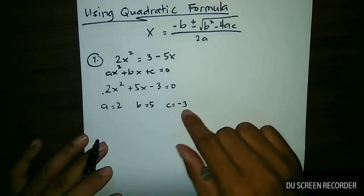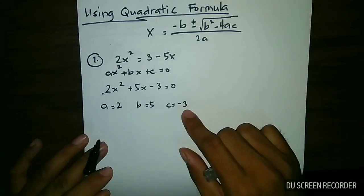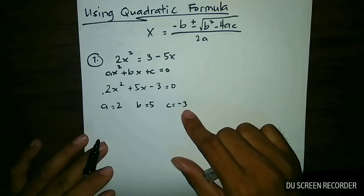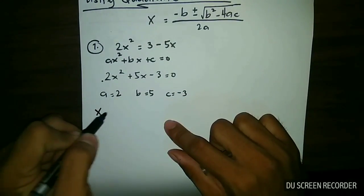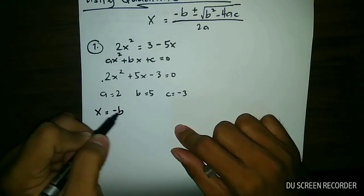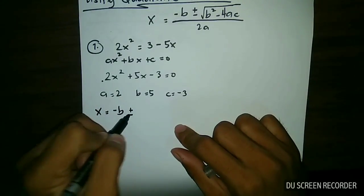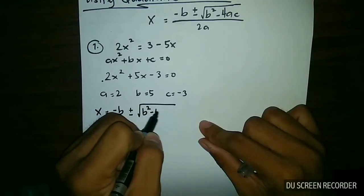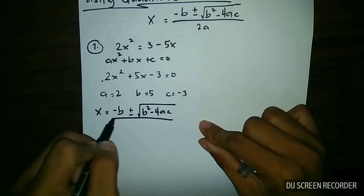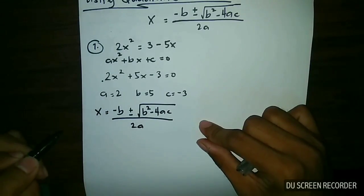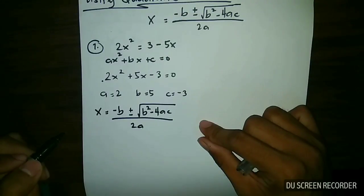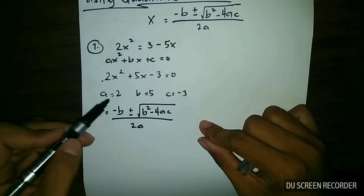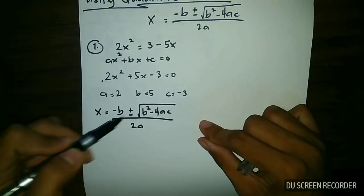After finding the values of a, b, and c, you're ready to use the quadratic formula, which is again x is equal to negative b plus or minus the square root of b squared minus 4ac, all over 2a. Step 3 is to substitute the values of a, b, and c into this formula.